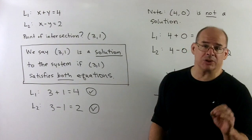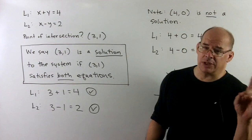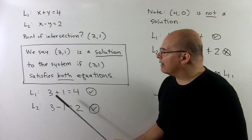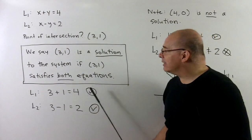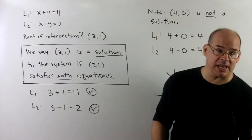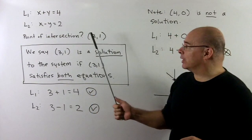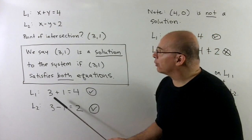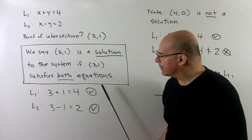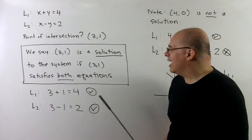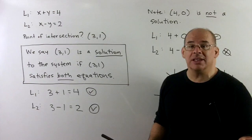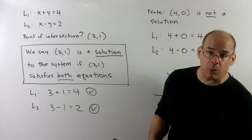To be sure that (3,1) is our point of intersection, let's introduce some terminology. I would say (3,1) is a solution of our system of linear equations if it satisfies both equations at the same time. To check that (3,1) is the point of intersection, I'll put it into both L1 and L2. We get 3 plus 1 equal to 4 — that's good. And 3 minus 1 equal to 2 — that's good. So (3,1) solves both equations at once, meaning we have our point of intersection.